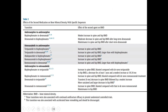For osteoanabolic to anti-resorptive sequencing: teriparatide to bisphosphonates increases spine and hip BMD; teriparatide to denosumab increases spine and hip BMD even more than with bisphosphonates. Abaloparatide to bisphosphonates, romosozumab to bisphosphonates, and romosozumab to denosumab all increase spine and hip BMD — with romosozumab to denosumab yielding larger gains than bisphosphonates. Overall, the anabolic-to-anti-resorptive sequence gives the best benefits in preserving and increasing spine and hip BMD.